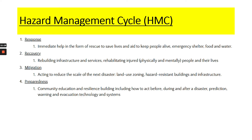Mitigation involves acting to reduce the problem — land use zoning, moving people away from hazard risk areas, building hazard-resistant buildings, reducing collapsing buildings, and improving infrastructure to ensure the economic services of a place are strong. Finally, we can prepare for the next event by training people in what to do before, during and after a disaster such as an earthquake. This was seen in Haiti with earthquake drills in schools after the 2010 event. Resilience building in the community, prediction, warning, and evacuation technology and systems are all relevant here.